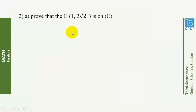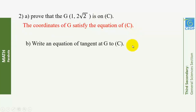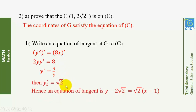Prove that the point G(1, 2√2) is on C. The coordinates of G satisfy the equation of C, so G is on C. Write an equation of the tangent at G to C. Differentiating both sides of Y² = 8X with respect to X gives 2YY' = 8, so Y' = 4/Y. At G, Y'(G) = 4/(2√2) = √2. Hence an equation of the tangent is Y − 2√2 = √2(X − 1).